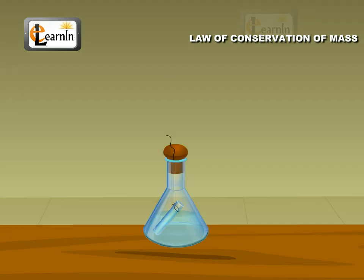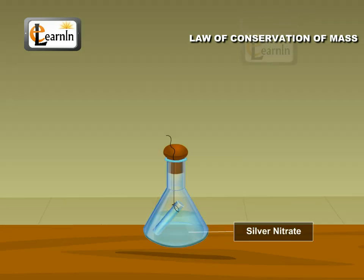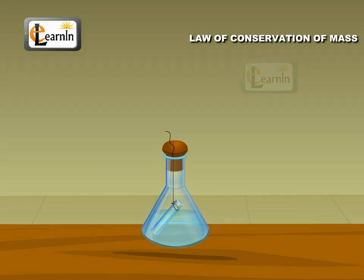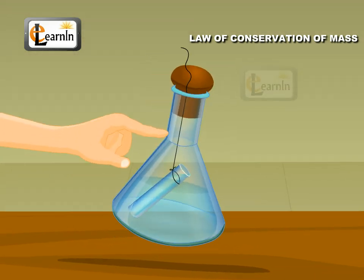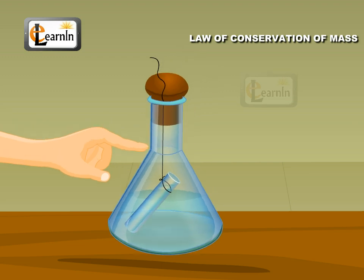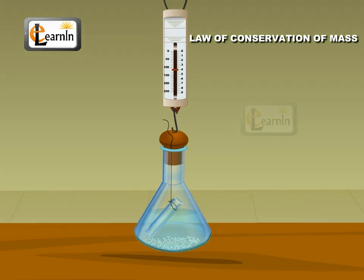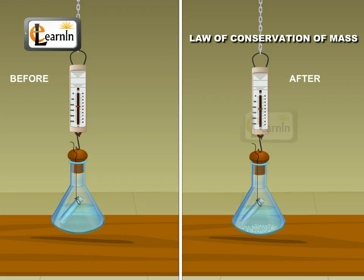The same reaction is repeated using silver nitrate solution in a conical flask and sodium chloride in a test tube. Again, a white precipitate is formed after mixing these solutions. In this case, there is also no change in the weight before and after the reaction.